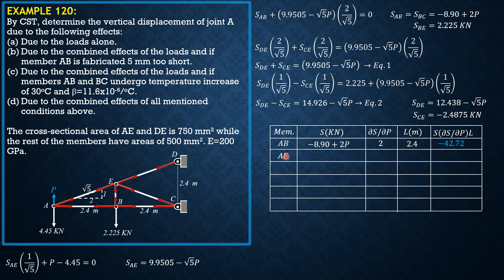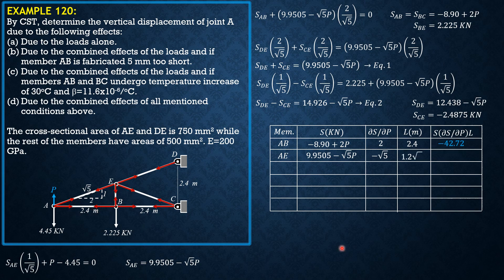For member AE: force = 9.9505 − √5·P, ∂S/∂P = −√5, length = √(2.4² + 1.2²) = 1.2√5 meters. At P = 0, product = 9.9505 × (−√5) × 1.2√5 = −59.703. This member has cross-sectional area 750mm².